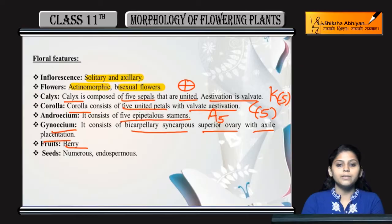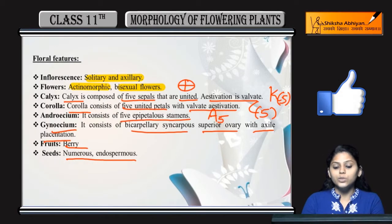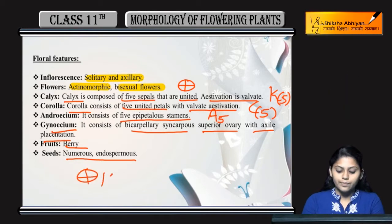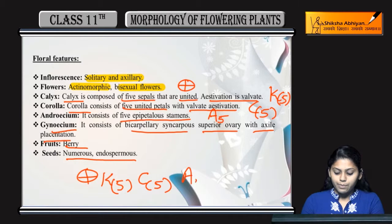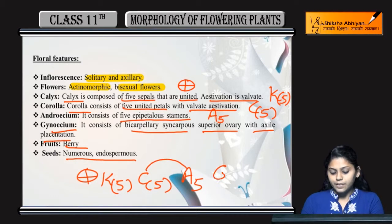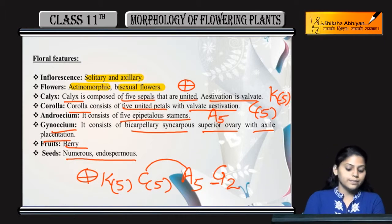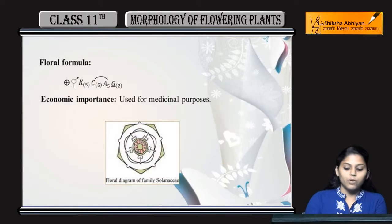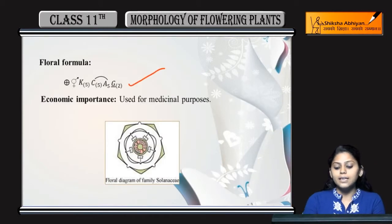Fruit example: berry. Seeds are numerous and endospermous. The floral formula is: actinomorphic, K(5) fused calyx, C(5) fused petals, epipetalous stamens shown with an arc, and bicarpillary gynoecium with superior ovary. Economic importance: used for medicinal purposes.